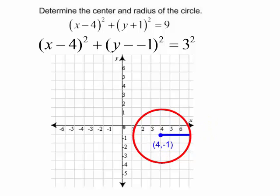So we did have a circle with the center at (4, -1) and it did have a radius of 3. Let's try another one.